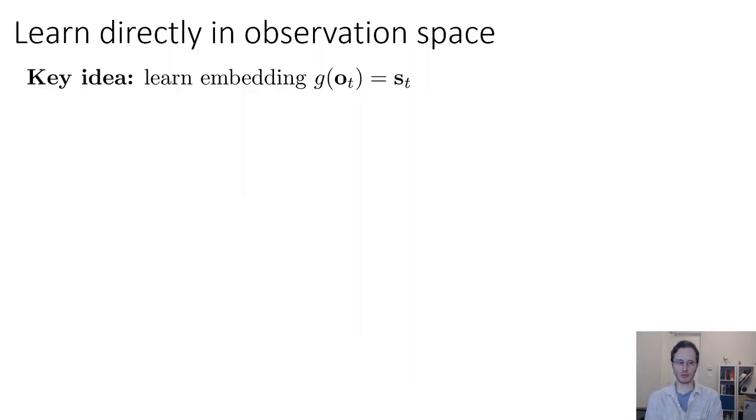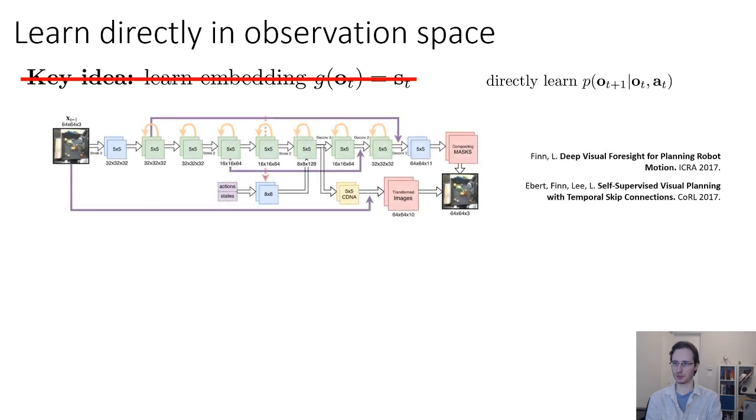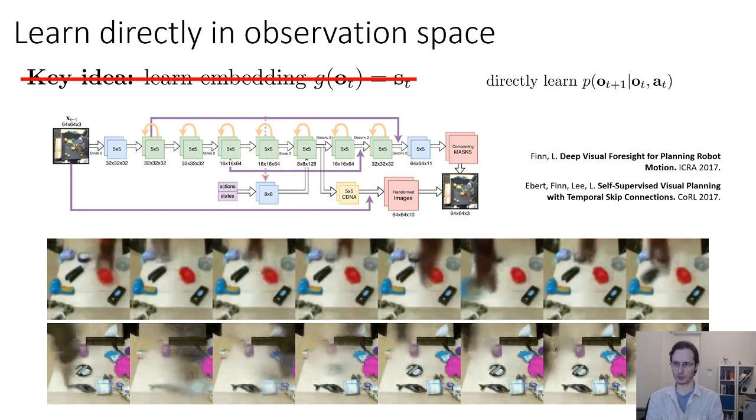Okay. Now, so far we've talked about algorithms that learn a latent state space model. They learn some sort of encoder with an embedding G of O equals ST. What if we dispense with the embedding altogether and actually go back to the original recipe in model-based RL, but in observation space? So, what if we directly learn P of O given O. If we have partial observability, then we probably need to use a recurrent model. So, we need to make O also depend on old observations. But as long as we do this, we can actually do a pretty decent job of modeling dynamics directly in image space. And there's been a fair bit of work doing this.